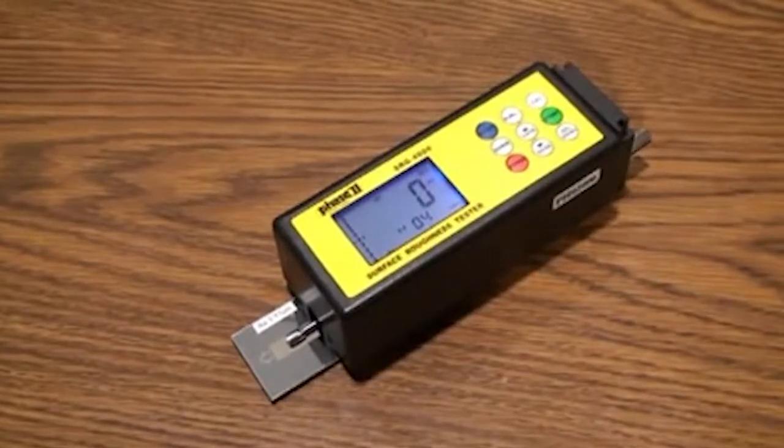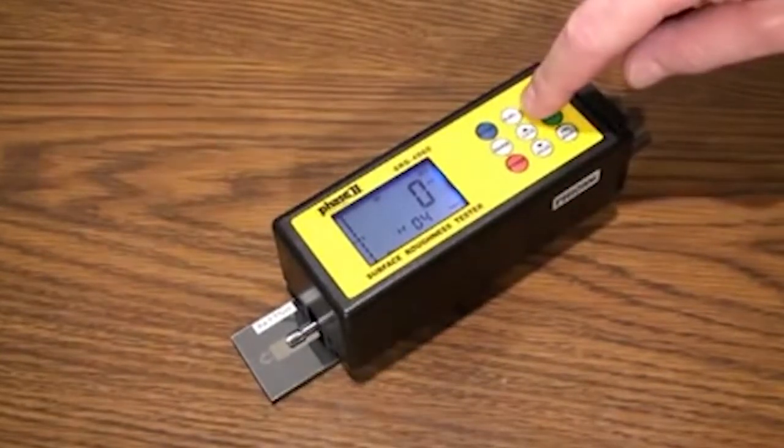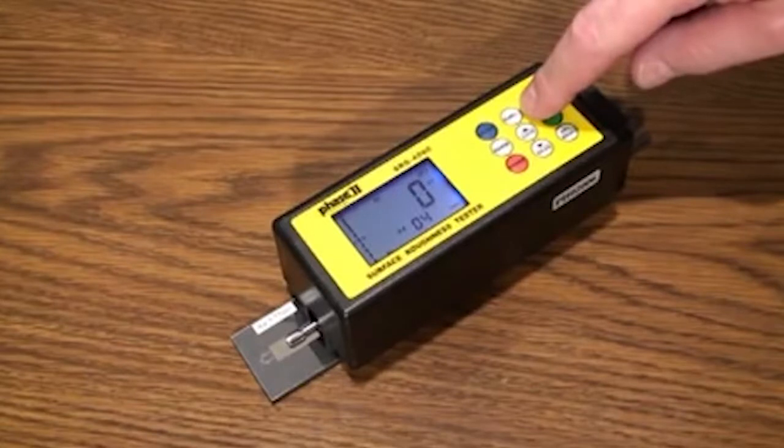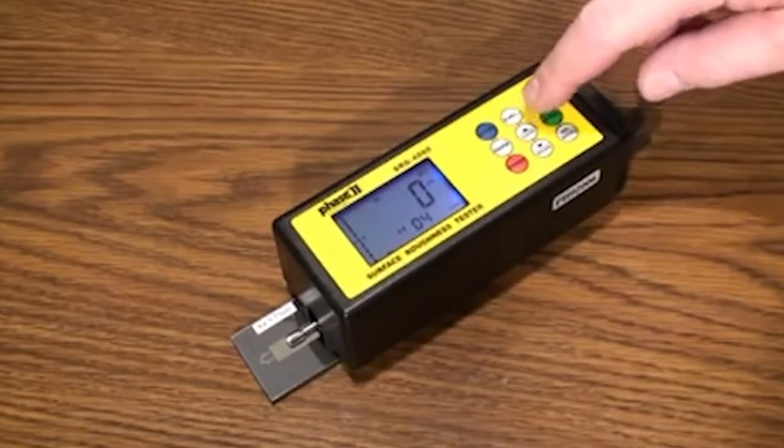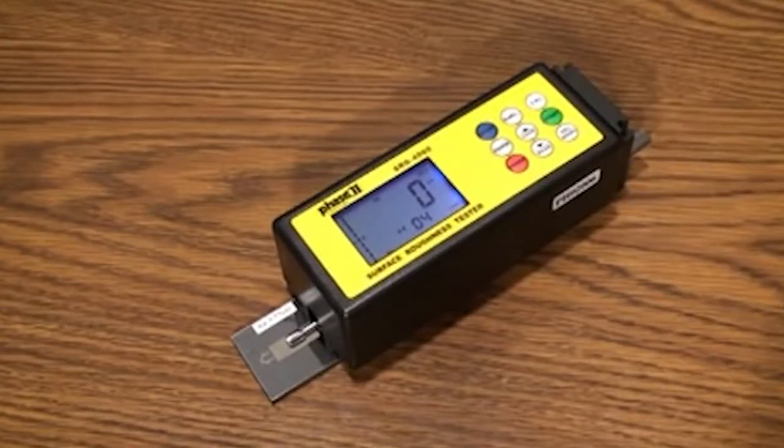The RA, RZ button determines the surface roughness parameter. The parameters are determined by your requirement, usually on a drawing or standard. If no parameter is called out, RA is commonly defaulted, the most popular being RA.